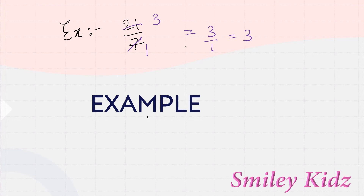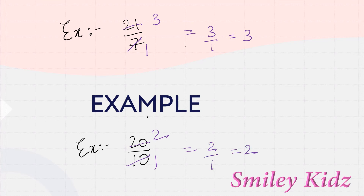Let's see another example: 20/10. Let's convert it into its standard form. 2 times 3 is 6, and 2 times 5 is 10, giving us 3/5. This is how we convert rational numbers into standard form, or simplest form.